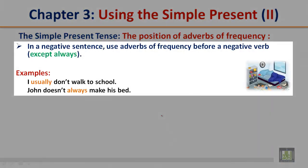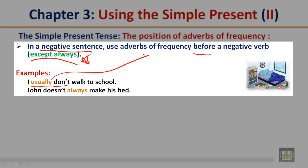In a negative sentence, use adverbs of frequency before a negative verb, except 'always'. For example: I usually don't walk to school. 'Usually' is the adverb of frequency and 'don't' is the negative verb. As you can see with the rule, 'usually' goes before a negative verb.